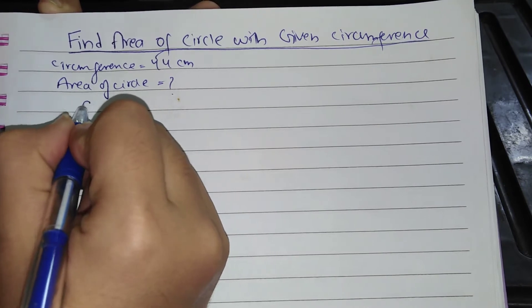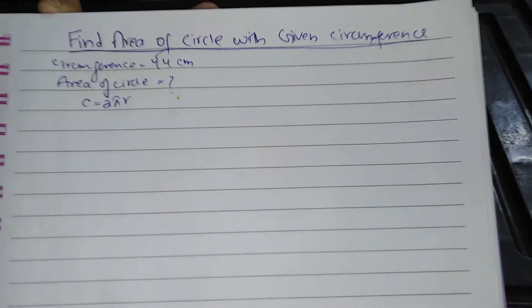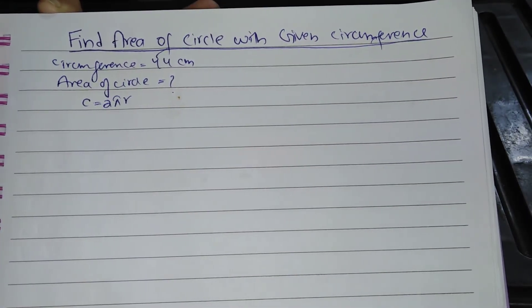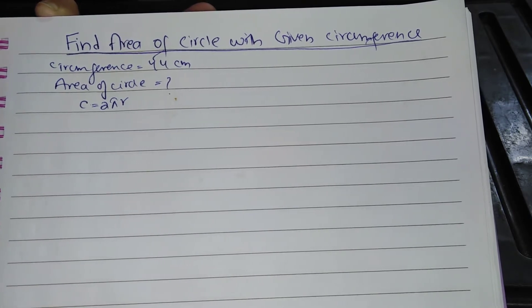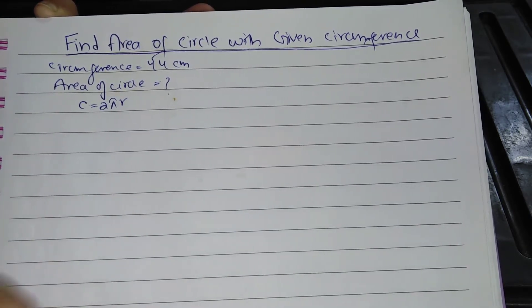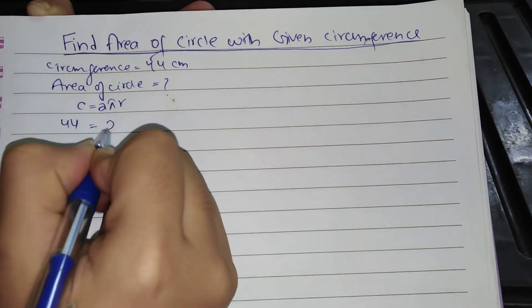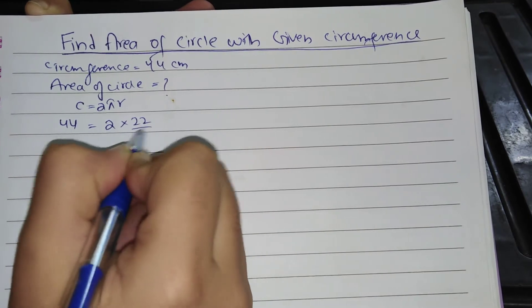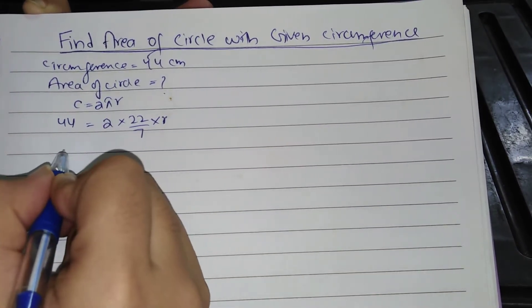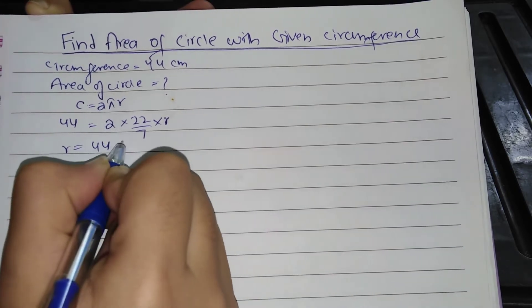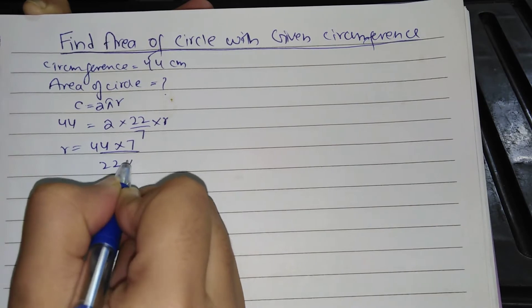The formula of circumference is C equal to 2πr. So for area, we have to find radius from the circumference formula, which is equal to 44 equal to 2 into 22 by 7 into r. Same thing, r equal to 44 into 7 divided by 22 into 2.